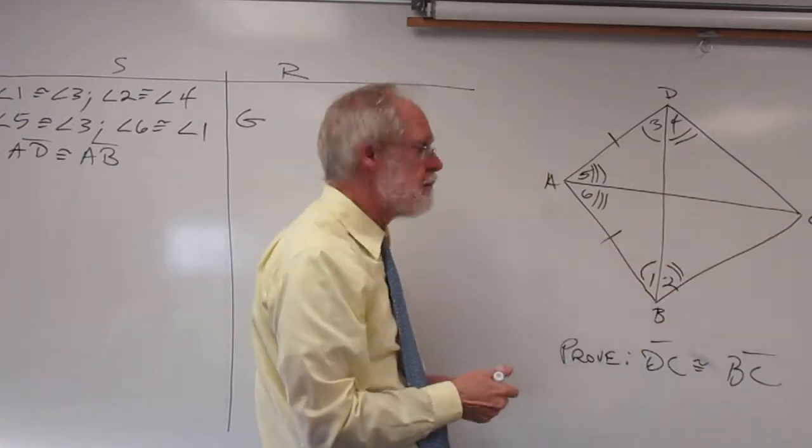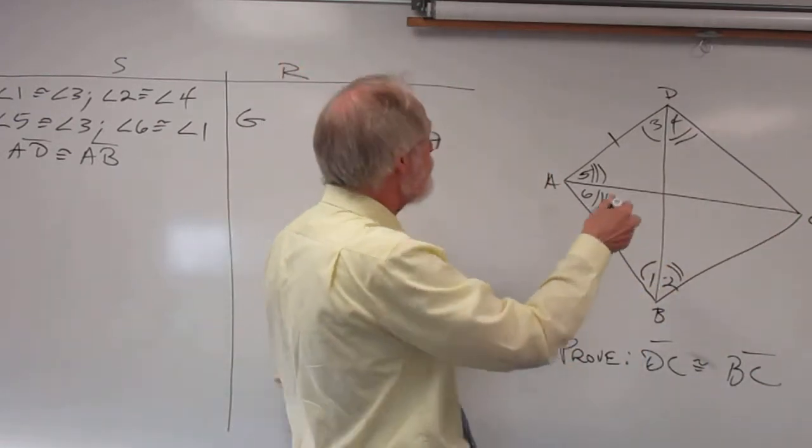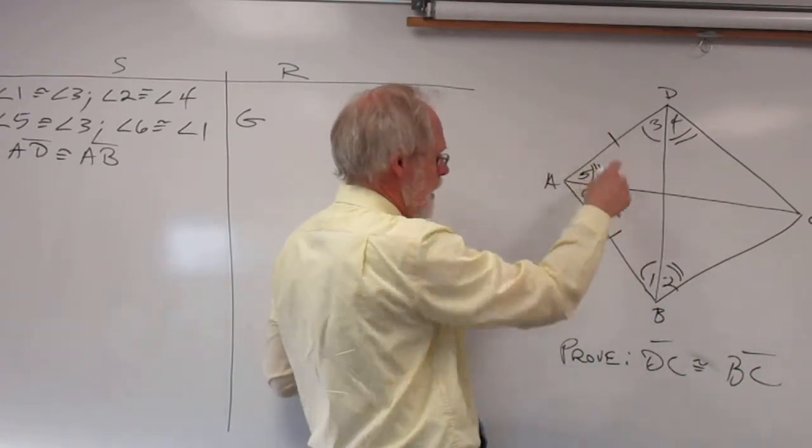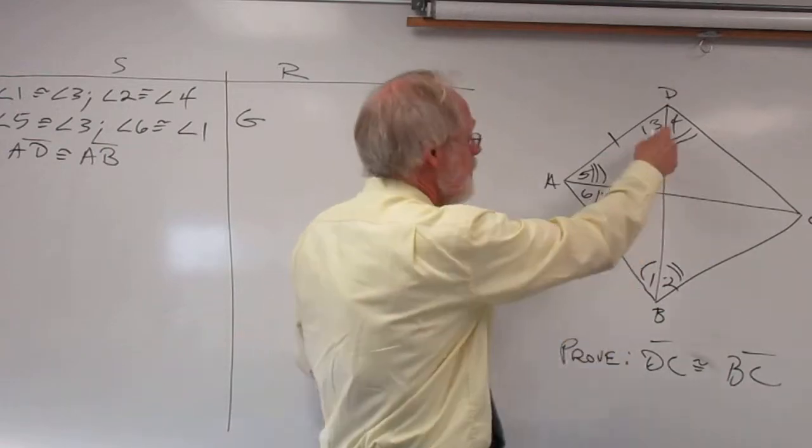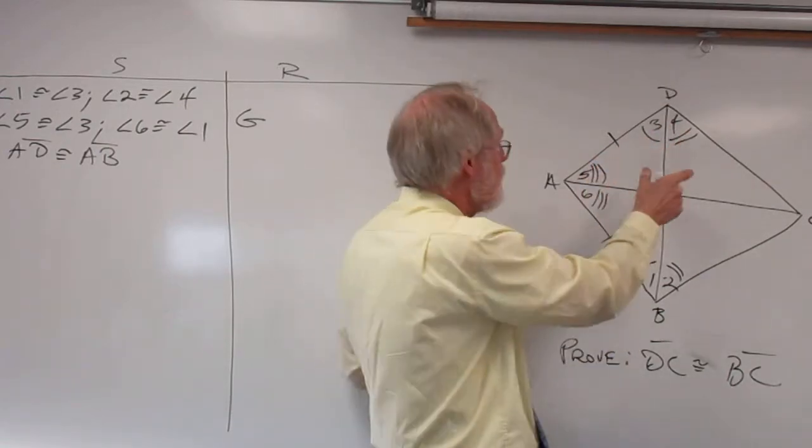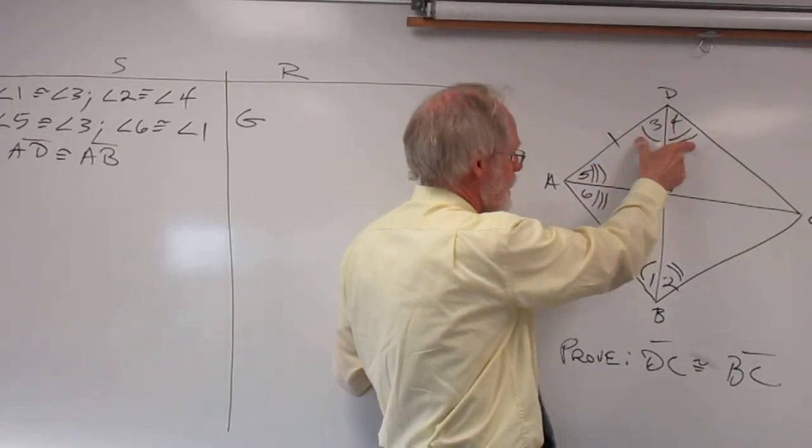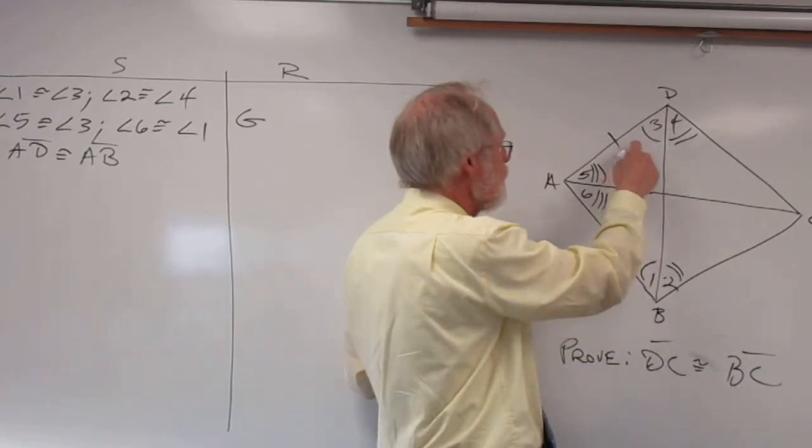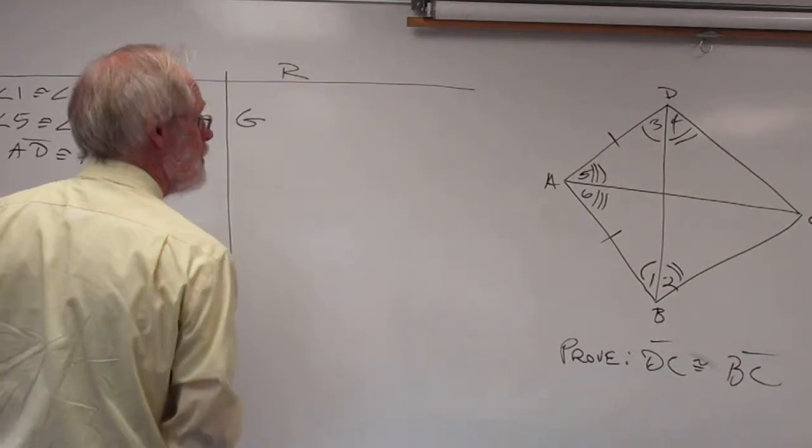Now it looks more possible to do that because you have this angle to this angle, this side to this side so we already have two parts and then we also have if we could get the combination of these two angles congruent to the combination of these two angles we would have angle side angle. So let's work on that and see if we can do it.